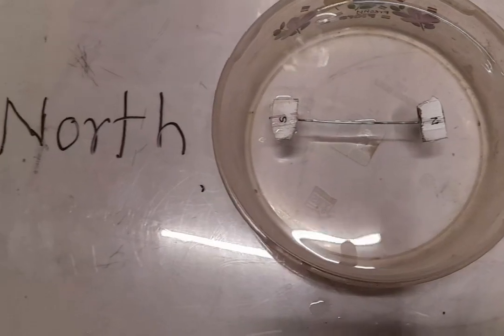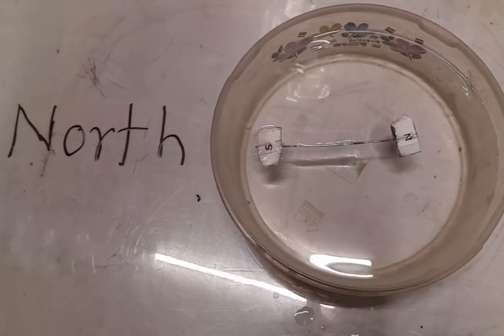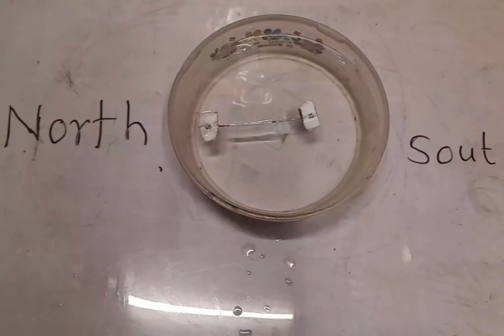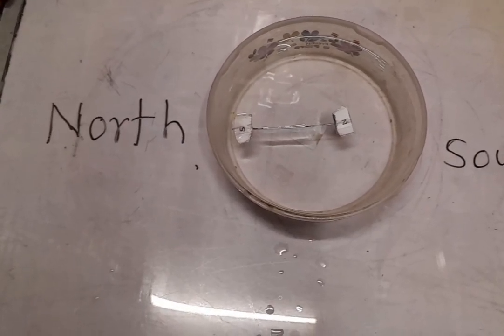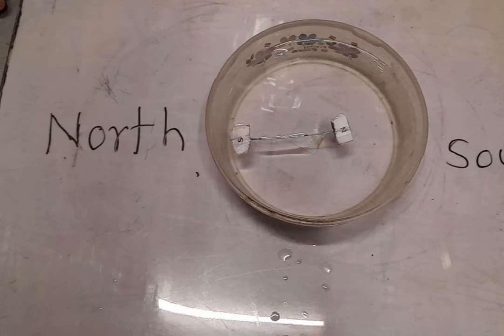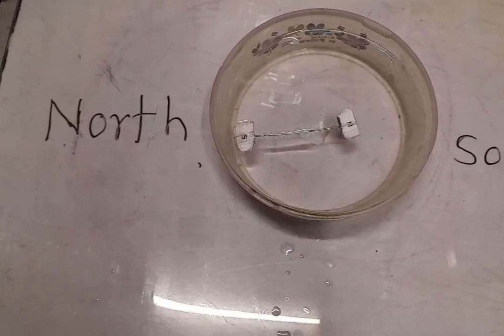It is completely stable. The needle is not deflecting. It proves that earth is a gigantic magnet and it will attract the opposite pole of the freely suspended magnetic needle on it.